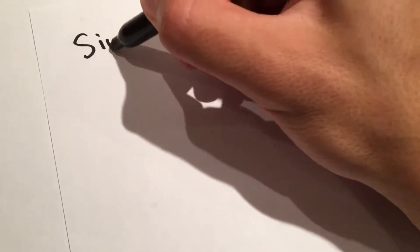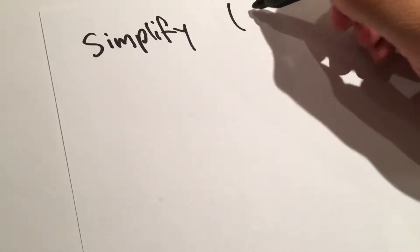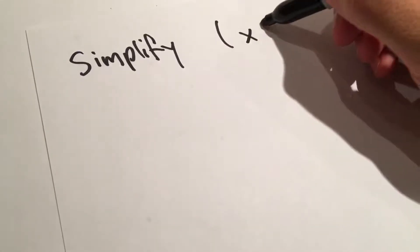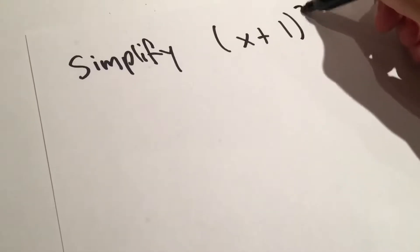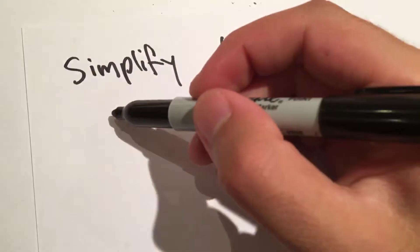We are simplifying x plus 1 squared. The squared symbol up here just means we multiply it by itself.